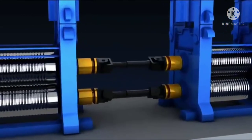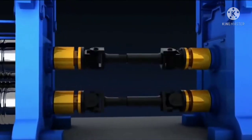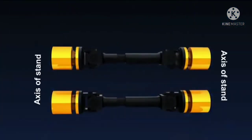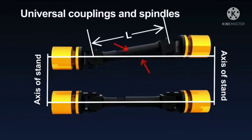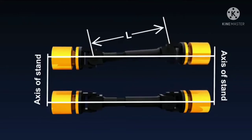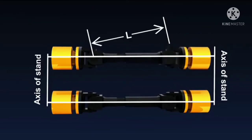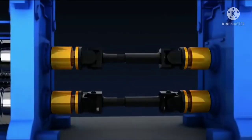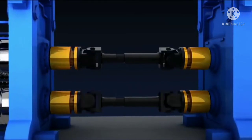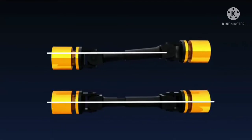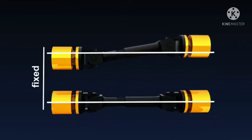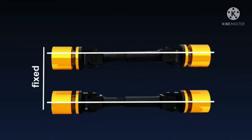Universal spindles allow rotation to be translated to the rolls at considerable angles — up to 8 to 10 degrees — between the axis of the spindle and the axis of the rolls or pinion of a pinion stand. The horizontal projection of the spindle's length alters in accordance with the angle of inclination. For this reason, one of the hinges of a spindle is usually fixed at the end of the driving shaft, and the other at the roll end is not fixed.